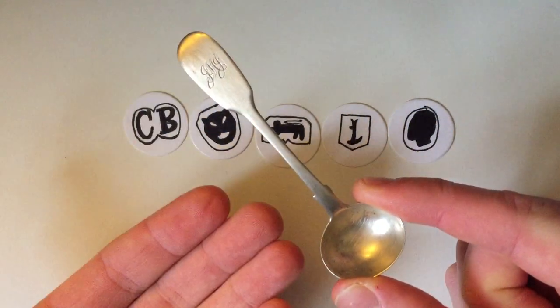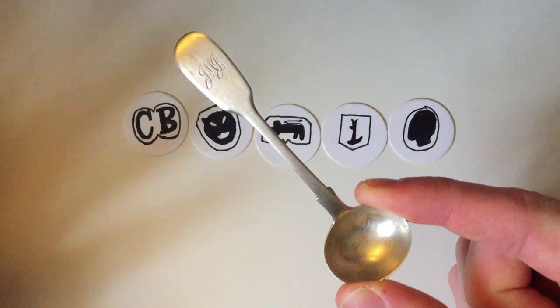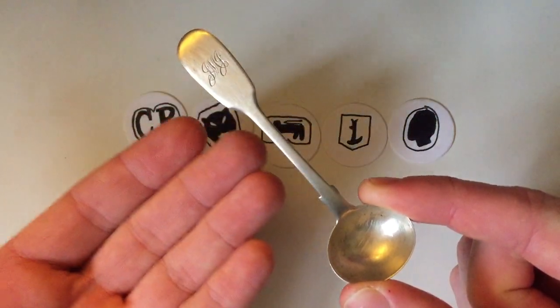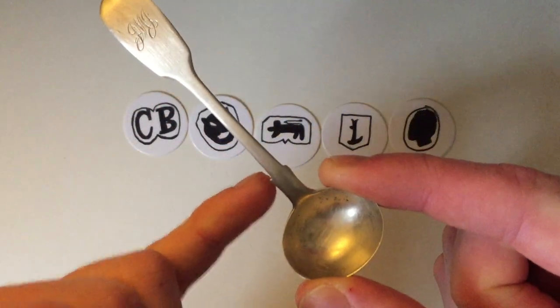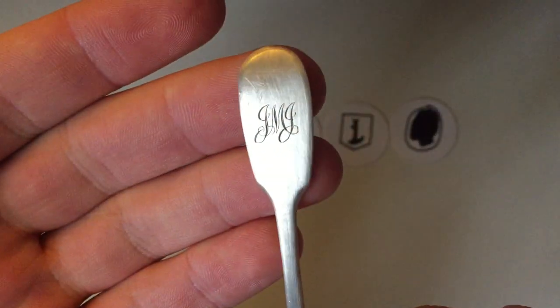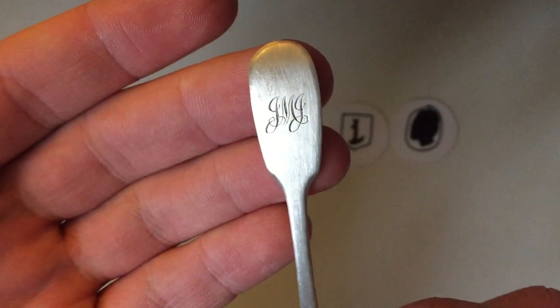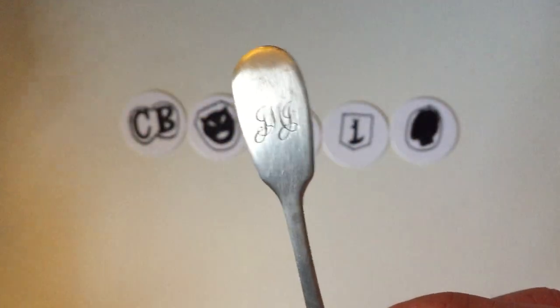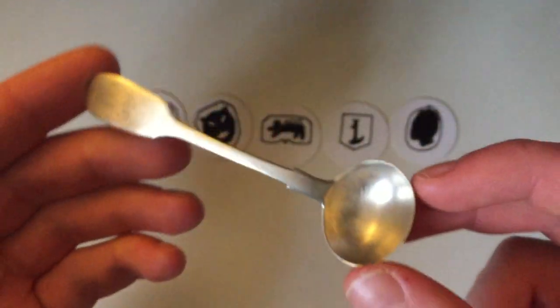I believe it's got a standard sort of fiddle thread pattern. So, plain edge and then these little bits that point out here. This one's actually been engraved, as you can see. So it's got the letters JMJ on it, presumably the initials of the original owner of this.